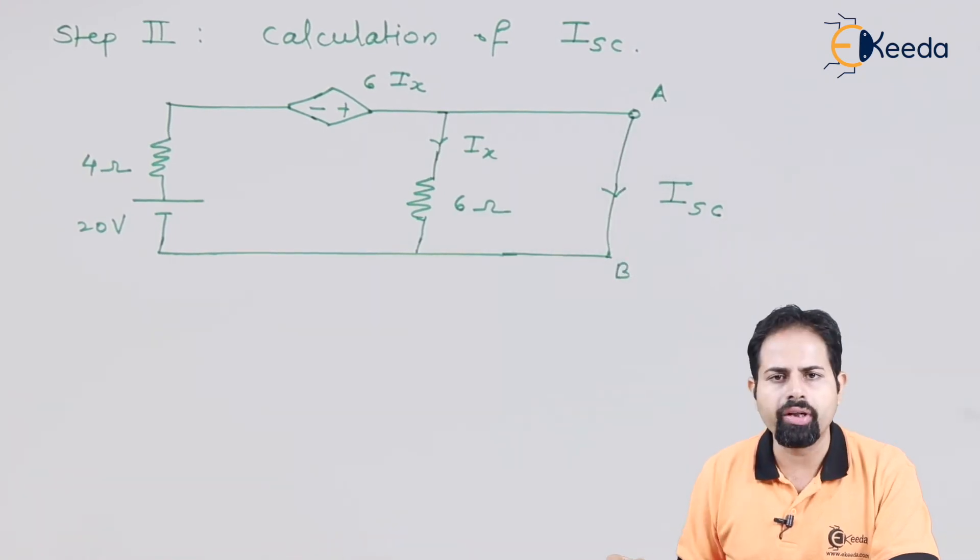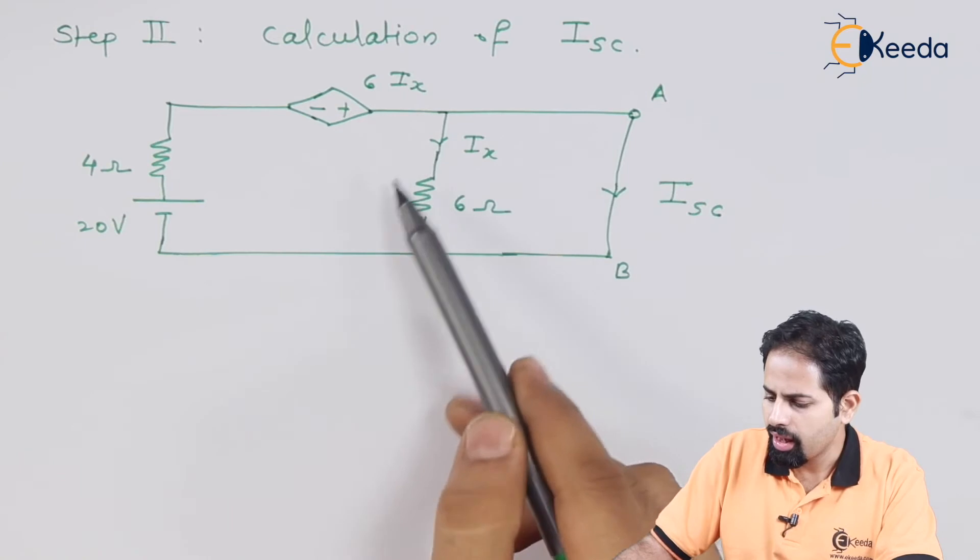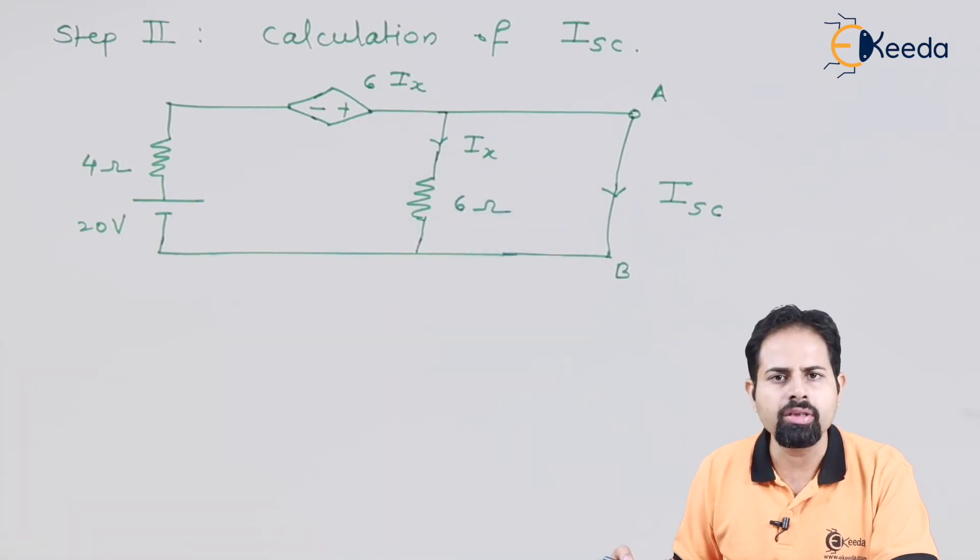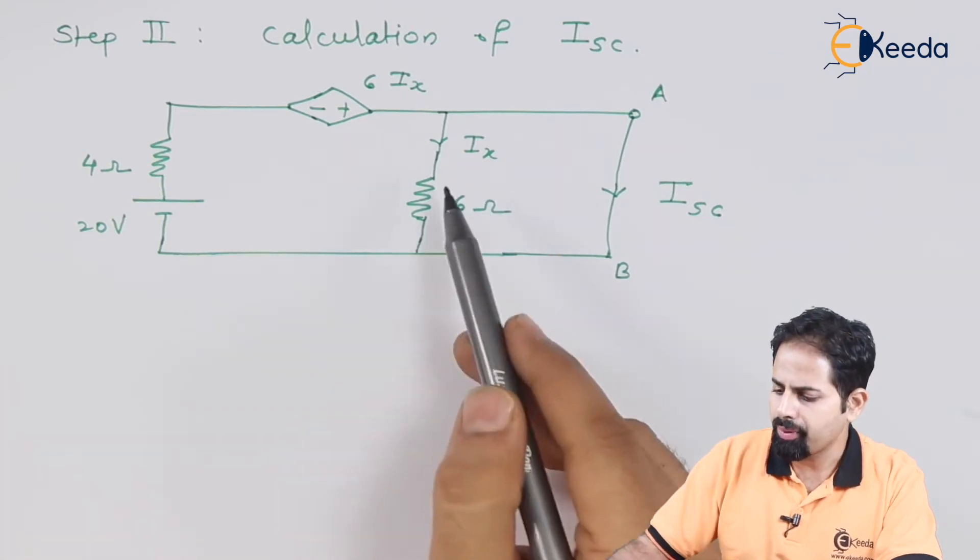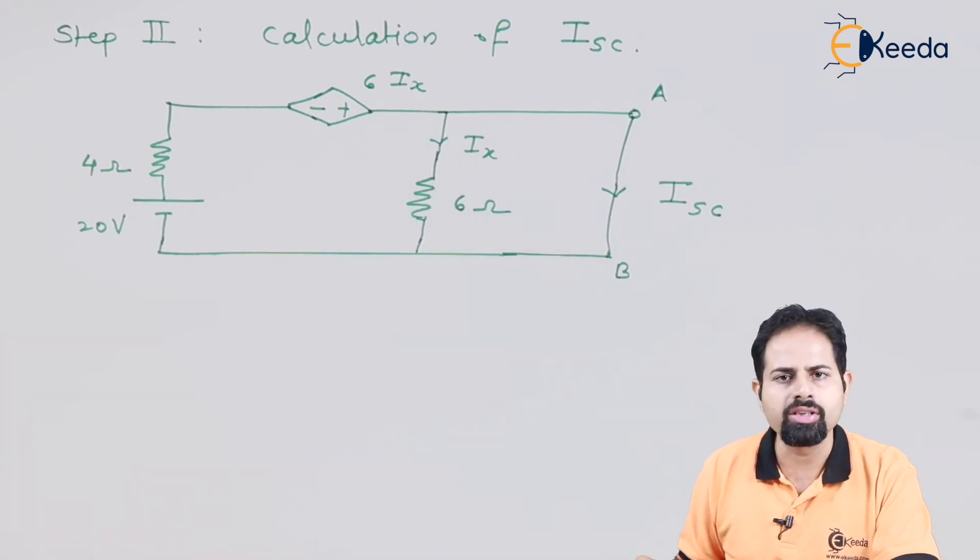Now for calculation of Isc, this A and B are shorted. And when this A and B are shorted, you can see that this 6 ohm resistance becomes redundant. That means current Ix across this resistance is 0.